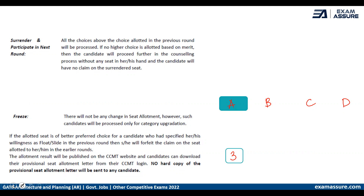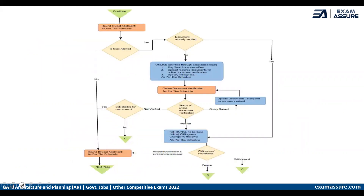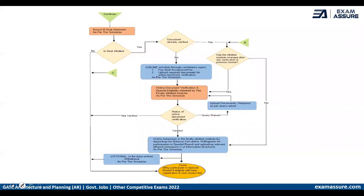I hope this is clear. Moving further to the second round, the process will be very similar to the first round — after the second round, some people may or may not be allotted a seat. If not allotted, you proceed to the third round. If allotted, the same process is followed. The same applies in the third round as well.